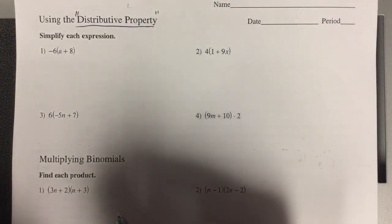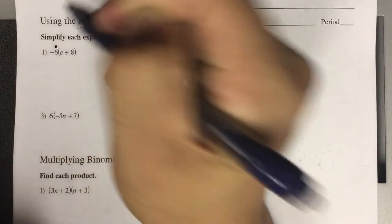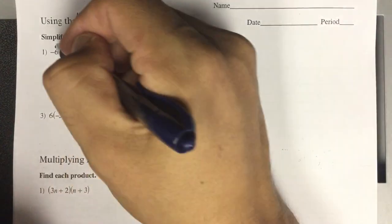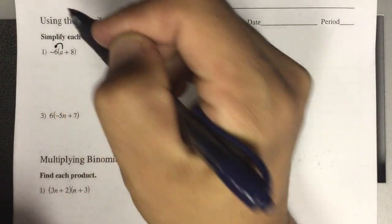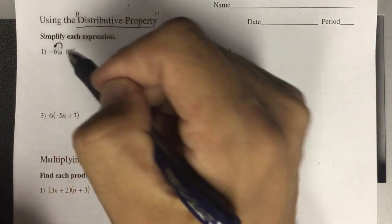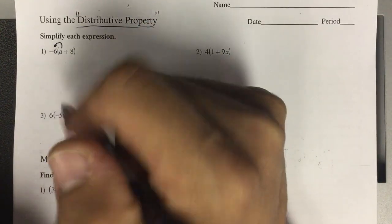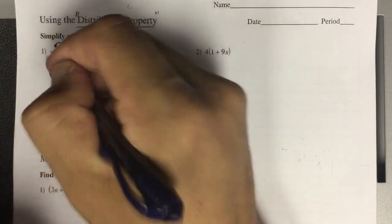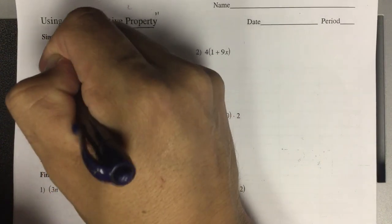Just a quick review of this. What we want is to take this negative 6 that's out in front and pass it out. So we're multiplying it. I want you to write it like this. Every time I draw a line, I'm going to write down the answer. Negative 6 times A is negative 6A.